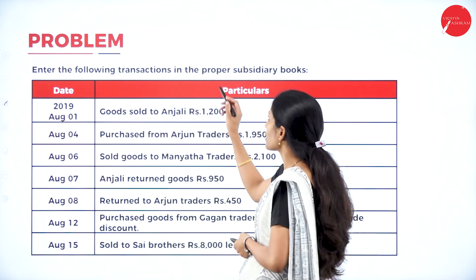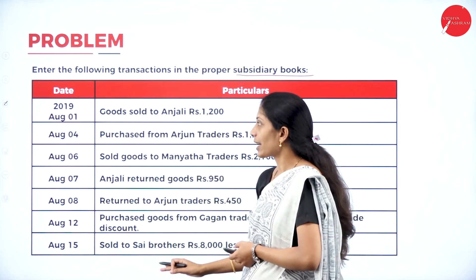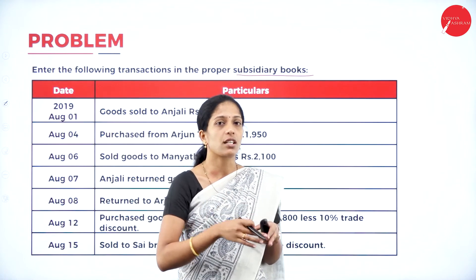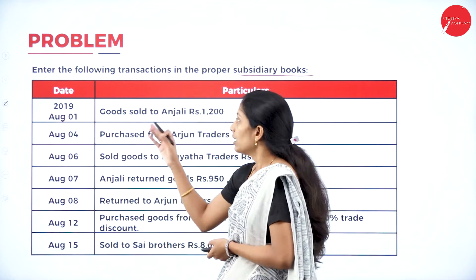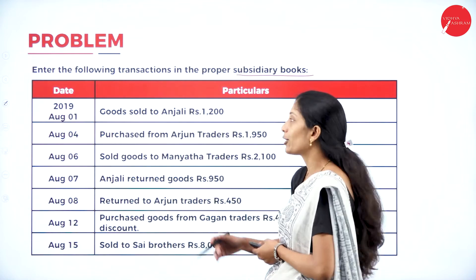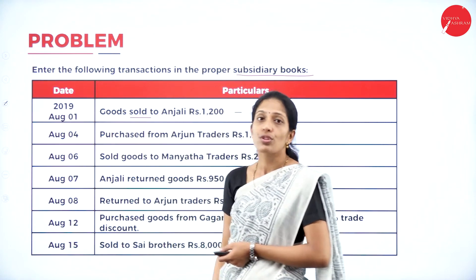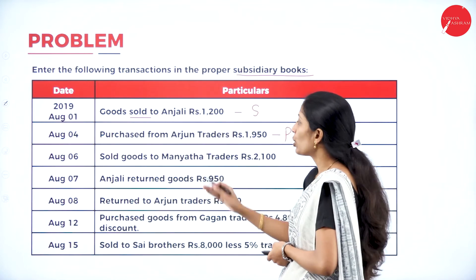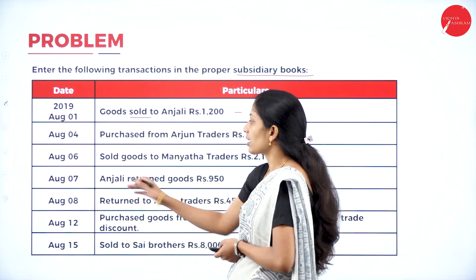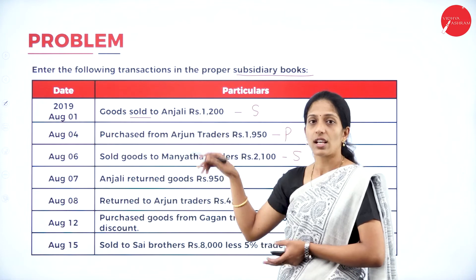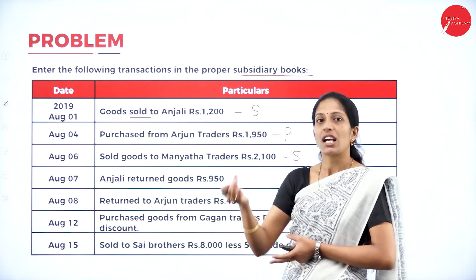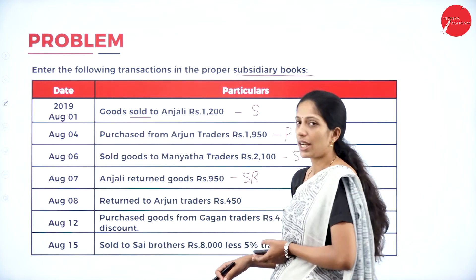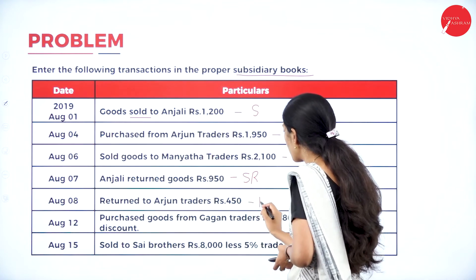Go through the problem: enter the following transactions in the proper subsidiary books. First we identify where each transaction should be recorded — whether in the purchase book, sales book, purchase returns, sales returns, or journal proper. First transaction: goods sold to Anjali — record in the sales book (credit sale). Second: purchase from Arjun Traders — purchase book. Third: sold goods to Maniata Traders — sales book. August 7th, Anjali returned goods — that is sales return. Next, return to Arjun Traders — we had purchased from Arjun, now returning it back — that is purchase return.